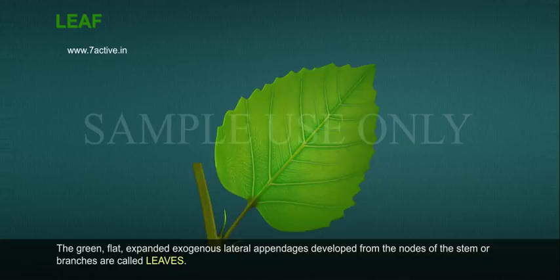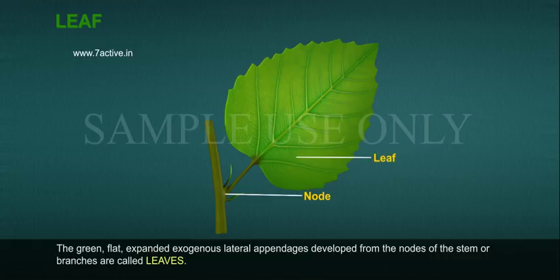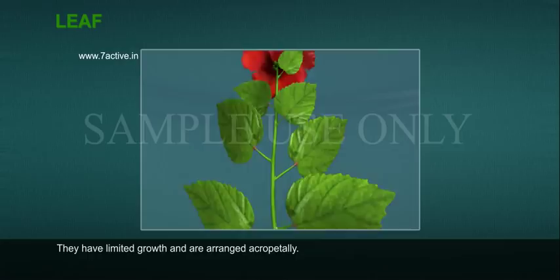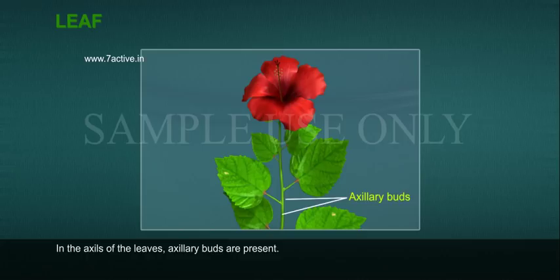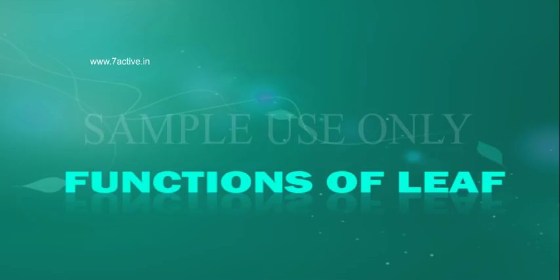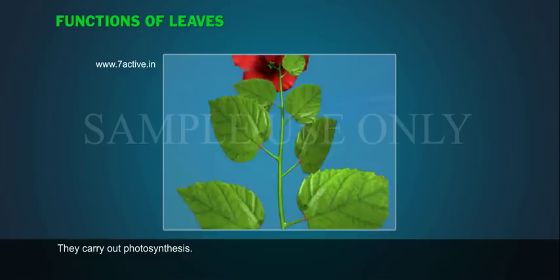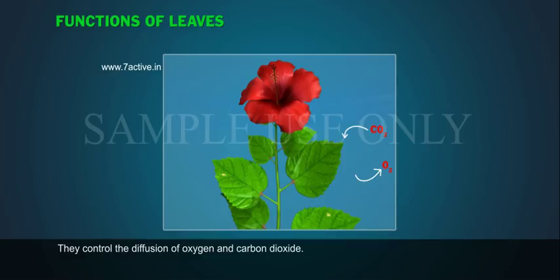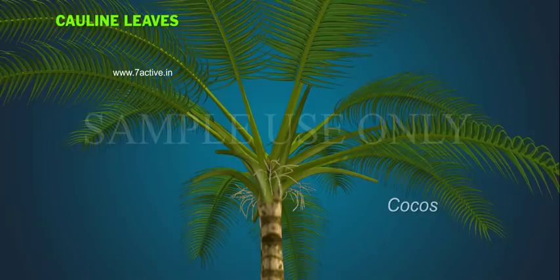The green, flat, expanded exogenous lateral appendages developed from the nodes of the stem are called leaves. They have limited growth and are arranged acropetally. In the axils of the leaves, axillary buds are present. Functions of leaves: they carry out photosynthesis; they control the diffusion of oxygen and carbon dioxide; they promote internal transportation of water and minerals by transpiration.